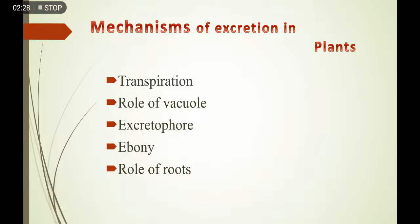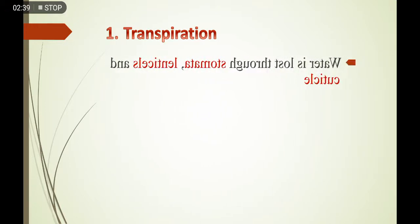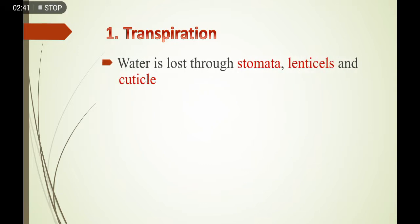پہلا mechanism transpiration کا ہے۔ Transpiration means loss of water vapours from the aerial parts of the plants — یعنی plants کے ہوا والے حصوں سے پانی کا بخارات کی صورت میں ضائع ہونا transpiration کہلاتا ہے۔ اس کے لیے plants اپنے stomata، lenticels، اور cuticle کو use کرتے ہیں۔ Most of the transpiration goes through the leaves from stomata.